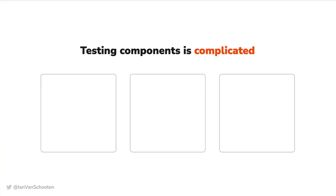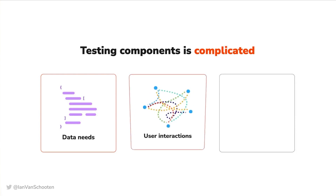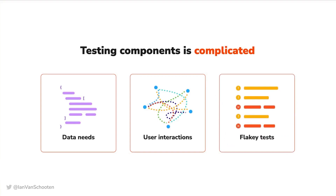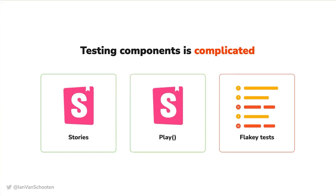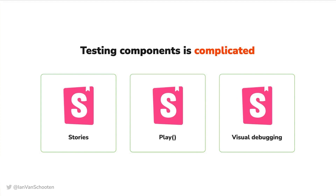Component testing is notoriously difficult for a number of reasons — normally you need to set up some kind of state or data to get the component into the condition you want to test. You need to have some way to trigger user interactions to verify the component is behaving the way you want. And debugging failing or flaky tests is tough when all you've got is a dump of the failing DOM state printed to the terminal. With Storybook, you already have the components shown in different states with mock data in your stories. We could add a play function in our stories to specify user interactions that happen when the story loads. And one of the most powerful parts of testing in Storybook is being able to actually see and inspect your component in a real browser. So now, testing components doesn't need to be so hard.